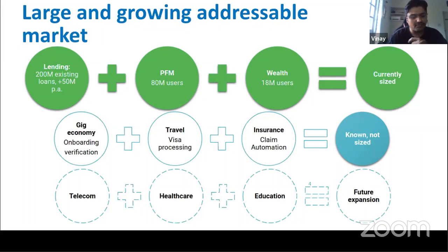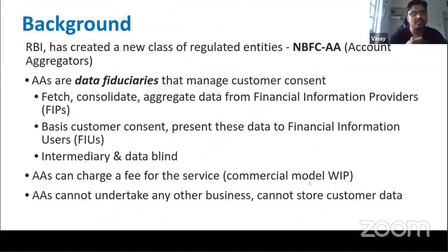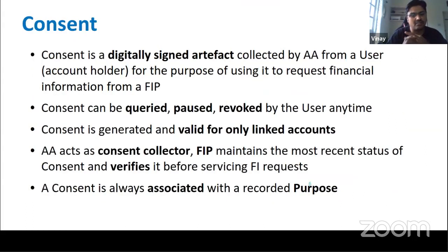The market is growing across lending, PFM, wealth, insurance, and even travel visa processing. For example, if you apply for a Schengen or US visa, consulates ask for bank statements. With account aggregator, the entire process becomes digital — you know exactly what details you're sharing. Some background: AAs are data fiduciaries, can charge a fee, but by RBI regulation cannot undertake any other business or store customer data. Consent is a digitally signed artifact that can be queried, paused, or revoked.